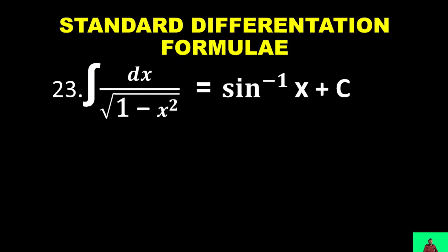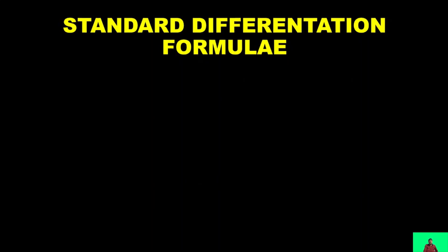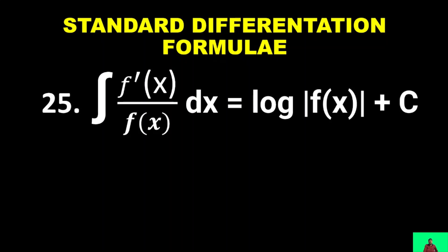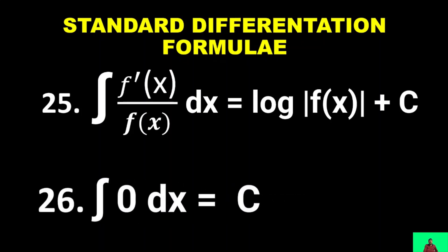∫1/√(1 − x²) dx = −cos⁻¹(x) + C, or sin⁻¹(x) + C. ∫f'(x)/f(x) dx = log|f(x)| + C. ∫0 dx = C.